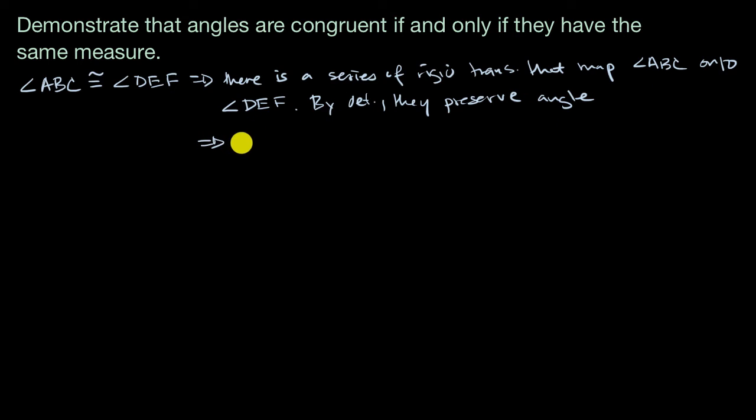We now know that the measure of angle ABC is equal to the measure of angle DEF. So we've demonstrated this green statement the first way, that if things are congruent, they will have the same measure. Now let's prove it the other way around.